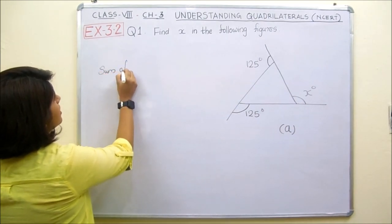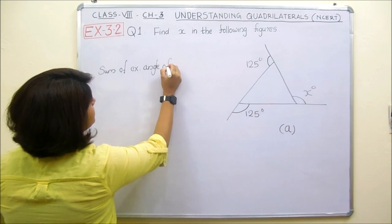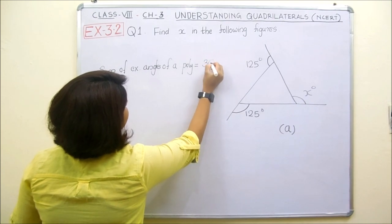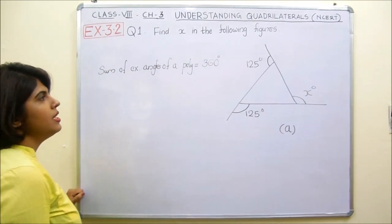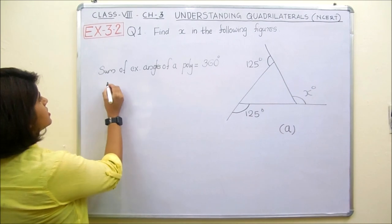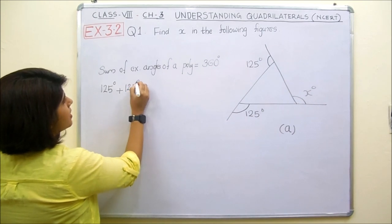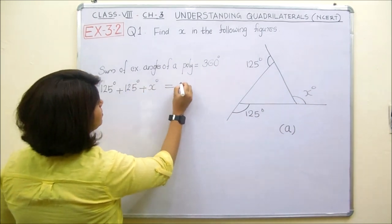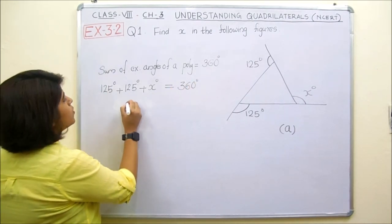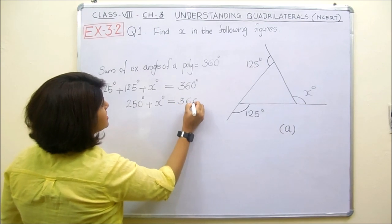The sum of exterior angles of a polygon is 360 degrees. The exterior angle measurements here are X degrees, 125 degrees, and 125 degrees. So we take the sum: 125 degrees plus 125 degrees plus X degrees equals 360 degrees. 125 plus 125 is 250, so 250 degrees plus X degrees equals 360 degrees.